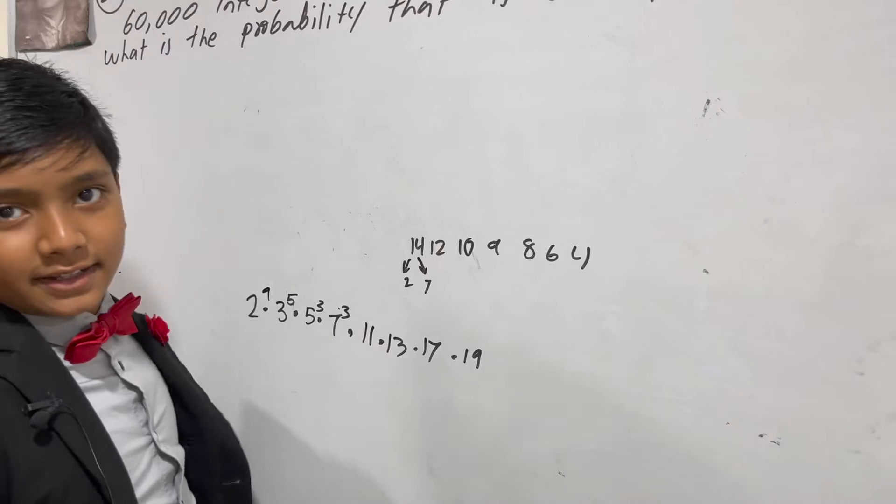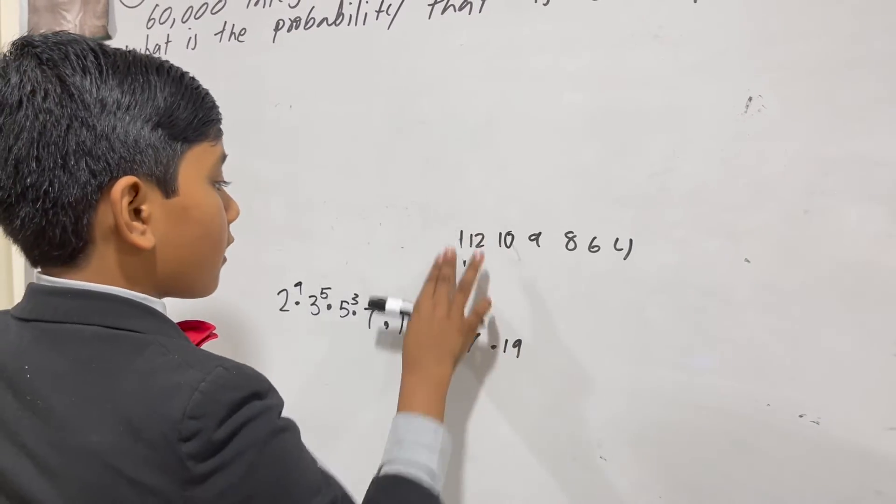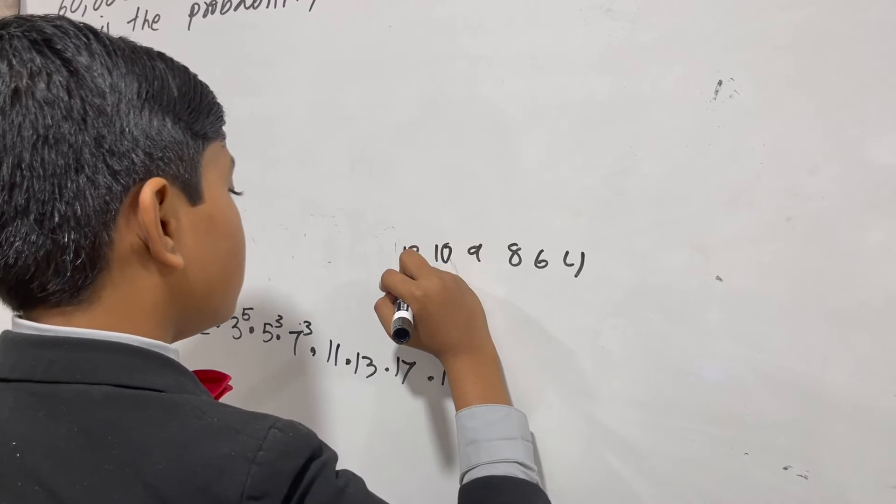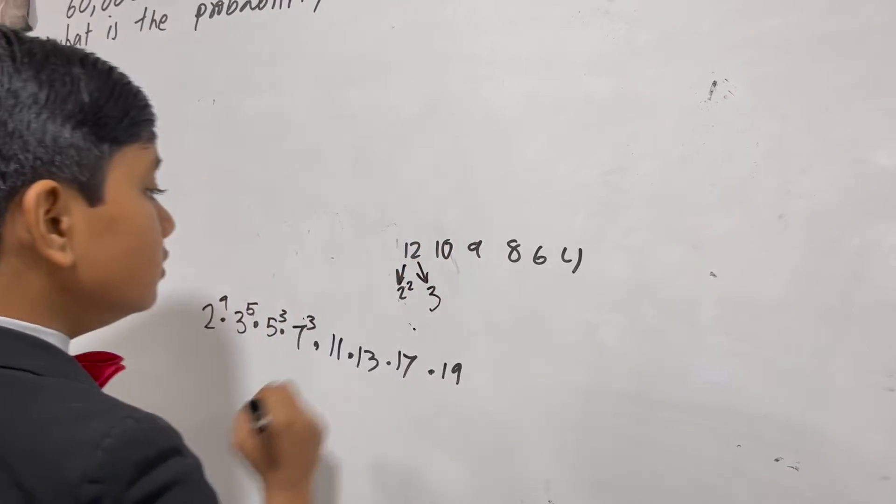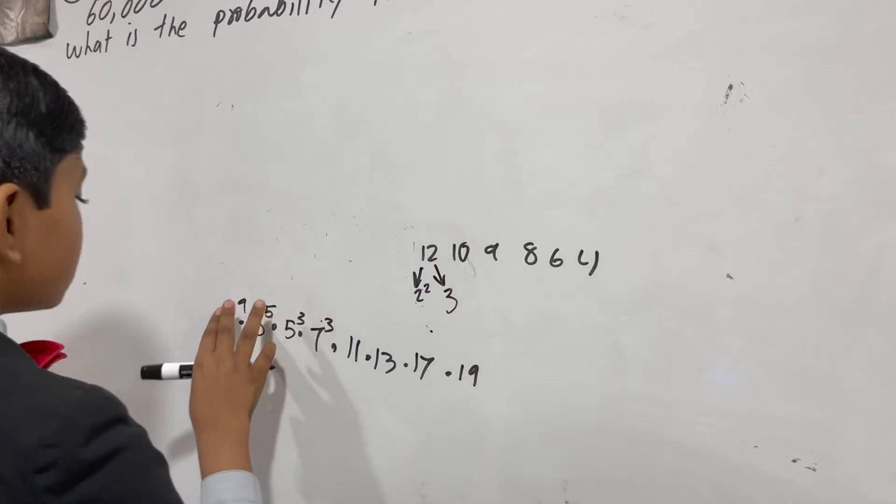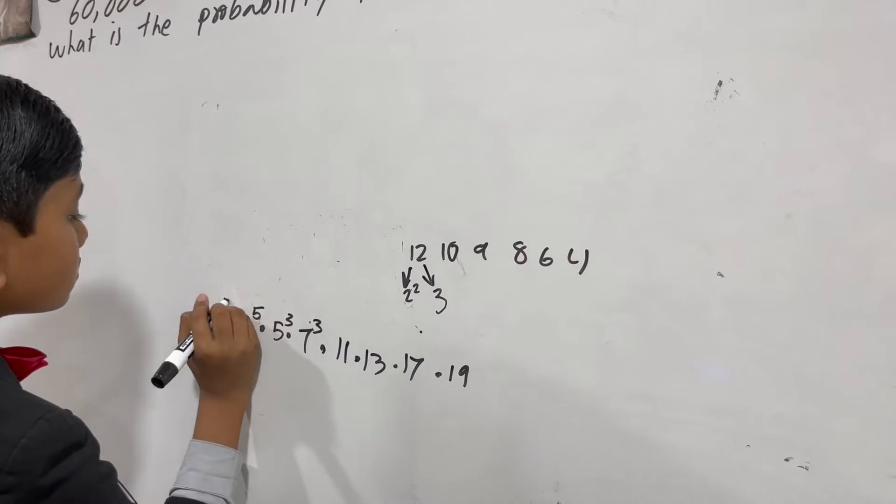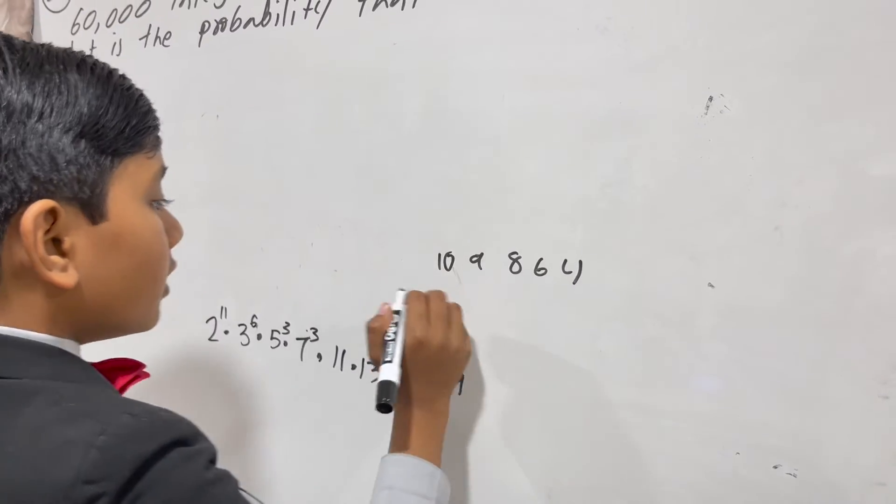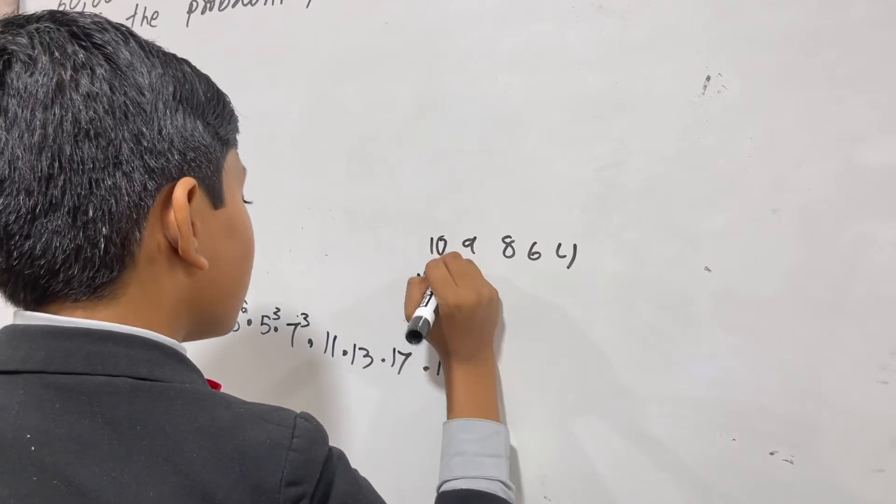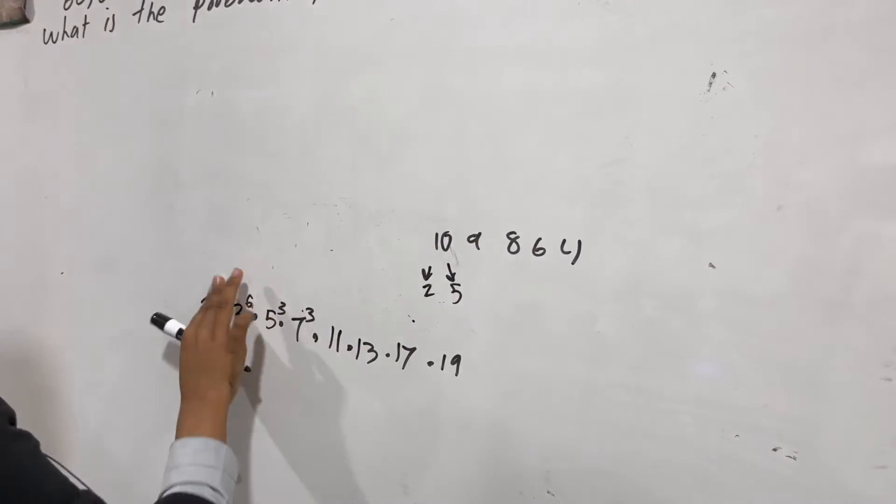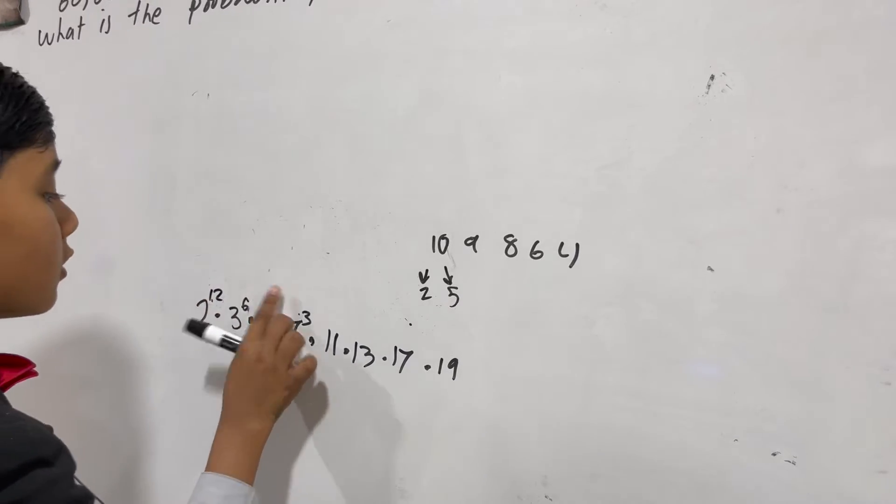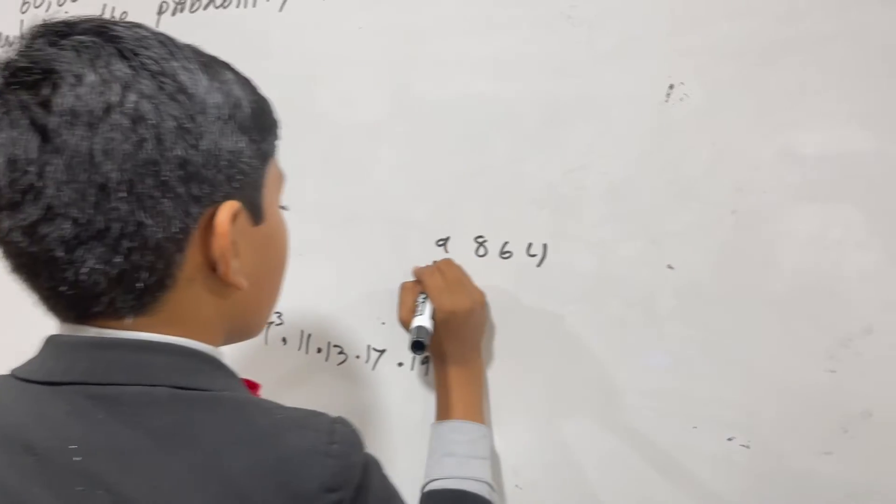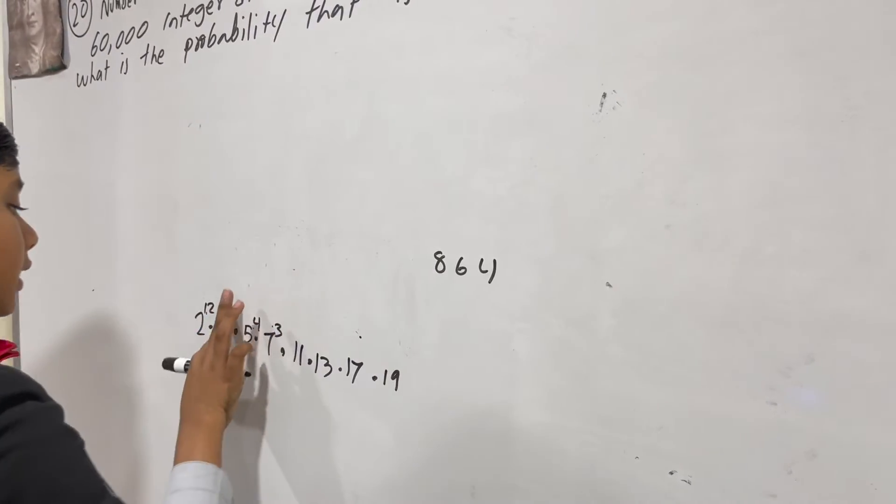And we can just go on and on with this. 10 is 2 and 5. Here comes the second 2 and 7. Two's really winning this race, ain't it? 12 is 2 squared and 3.